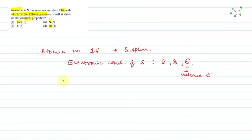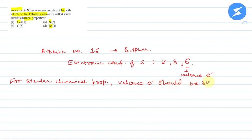The element with valence electron 6 will show similar chemical properties to sulfur. For similar chemical properties, valence electrons should be same.